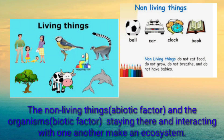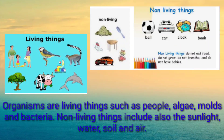The non-living things, the abiotic factor, and the organisms' biotic factor staying there and interacting with one another make up an ecosystem. Organisms are living things such as people, algae, molds, and bacteria. Non-living things include sunlight, water, soil, and air.